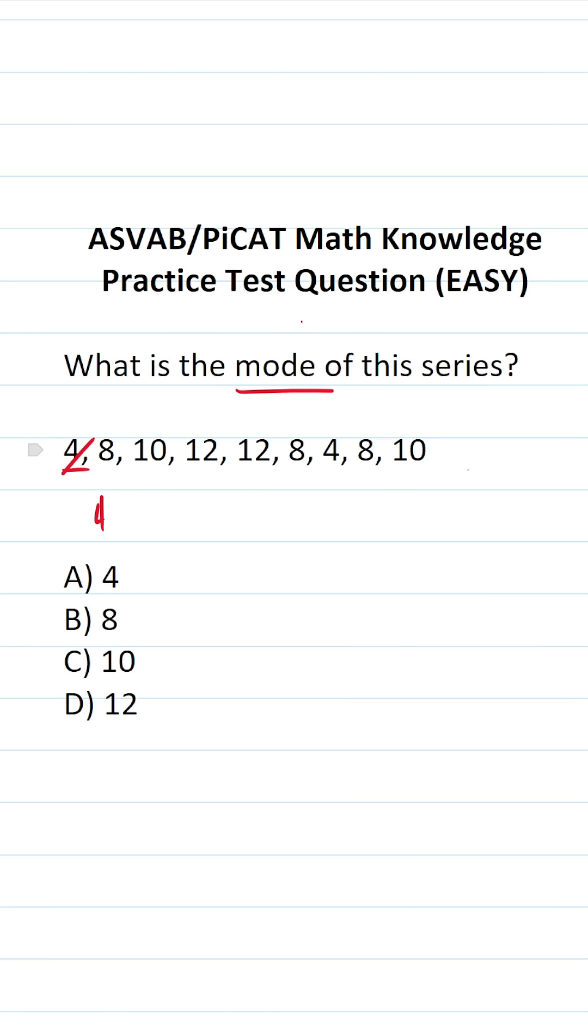We have 4, cross it out. We have one more 4 here, cross it out. Then we have 8, 8, and 8. Then we have 10 and another 10. Then we have two 12s.